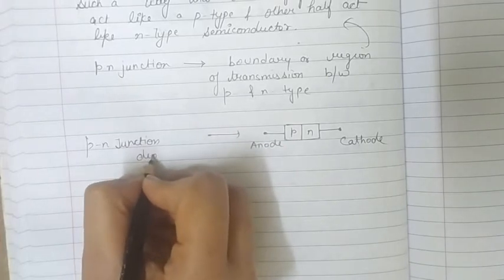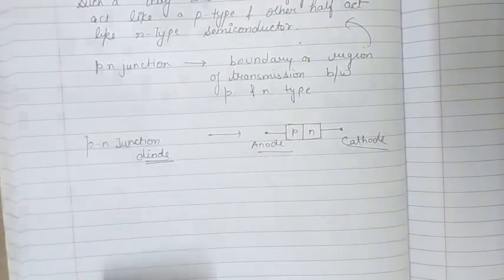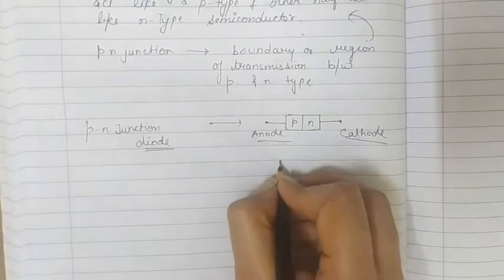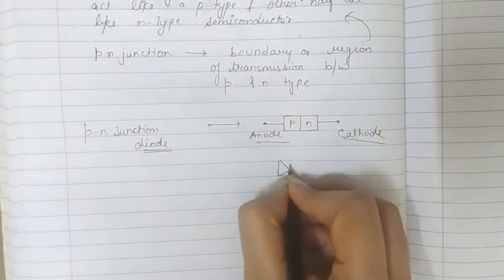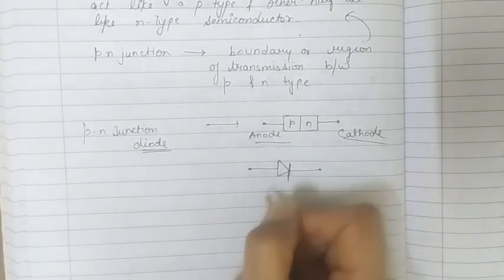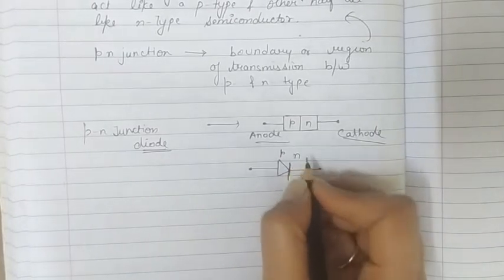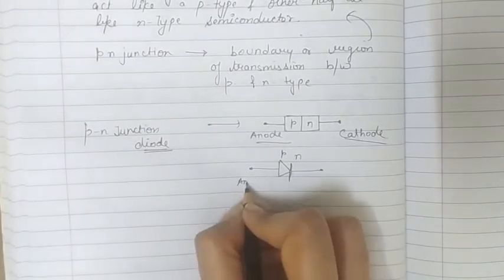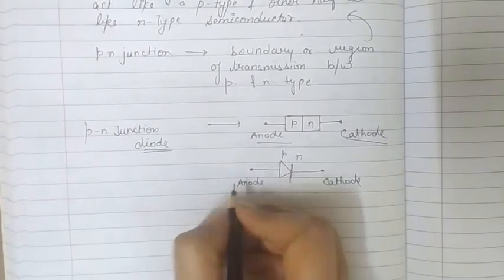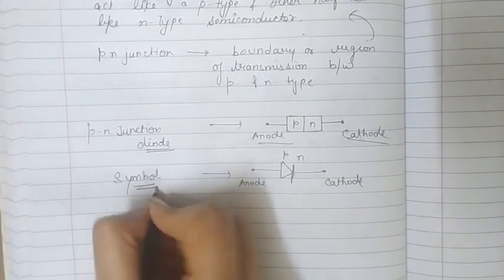The word 'diode' refers to two, meaning it has two electrodes or two connections — that's why we call it a PN junction diode. It is represented by a symbol with a triangle and a bar or straight line. The triangular section represents the p-section and the bar represents the n-section. The p-side is the anode and the other is the cathode — this is the symbol of a PN junction diode.